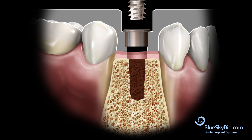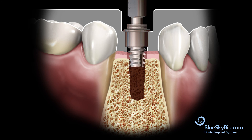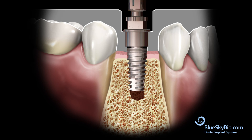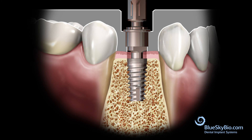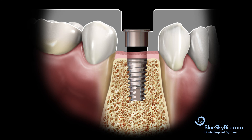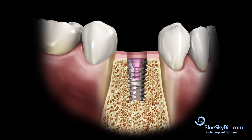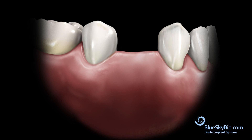Insert the implant using the guided insertion ratchet driver. The stop section of the guided driver will stop at the top of the master tube — further advancement can damage the bone and cause loss of primary stability. The cover screw is inserted into the implant, the flap is sutured, and adequate time is allowed for the implant to integrate.